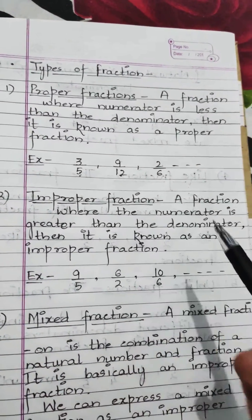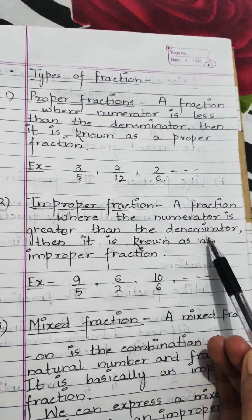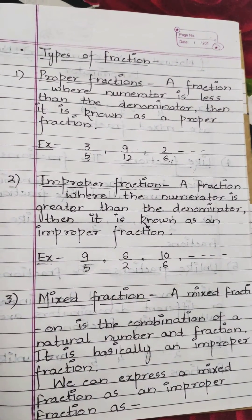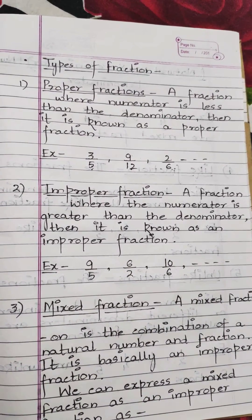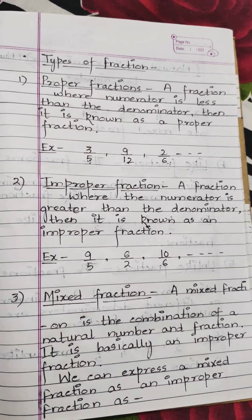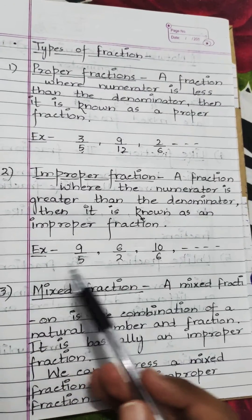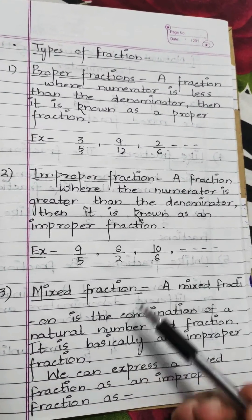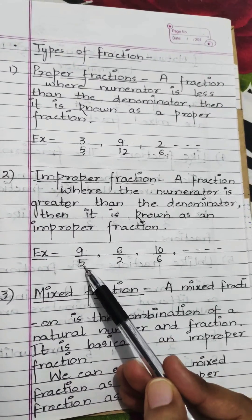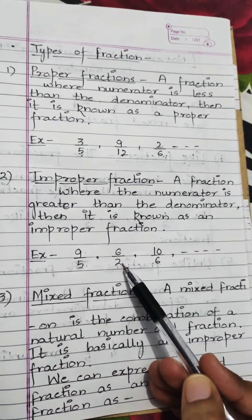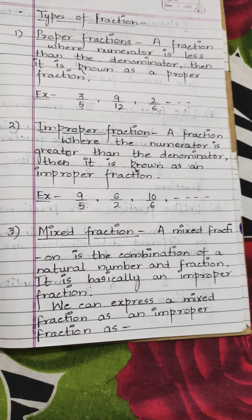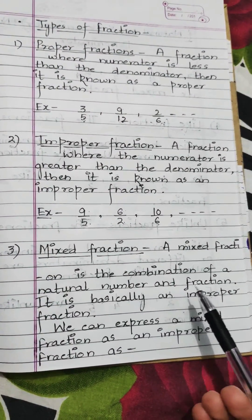The next type is the improper fraction — a fraction where the numerator is greater than the denominator. In a proper fraction the numerator is less than the denominator, but in an improper fraction the numerator is always greater than the denominator. Examples: 9 upon 5, 6 upon 2, and 10 upon 6 — in all three, the numerator is greater than the denominator.